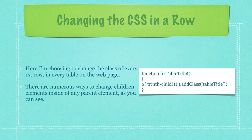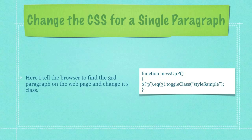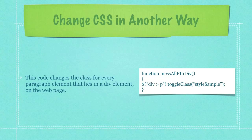Here I'm choosing to change the class of every first row in every table on the web page. There are numerous ways to change children elements inside of any parent element as you can see. Here I tell the browser to find the third paragraph on the web page and change its class. This code changes the class for every paragraph element that lies in a div element on the web page.